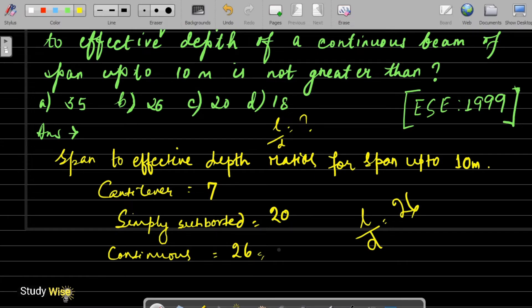So this is the answer, span to effective depth is 26 for continuous beam, so option B is the correct answer. Thank you.